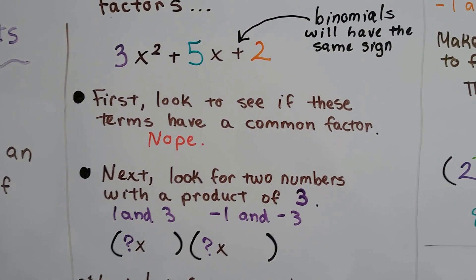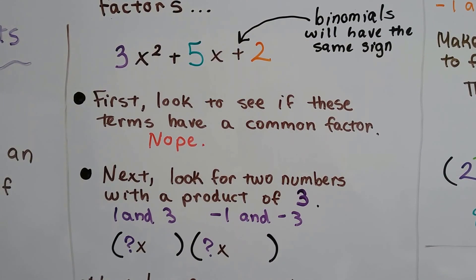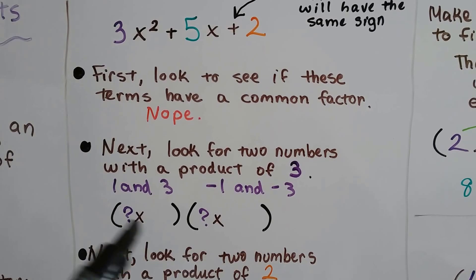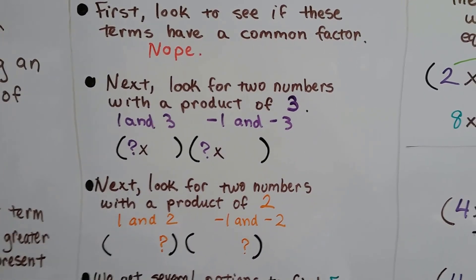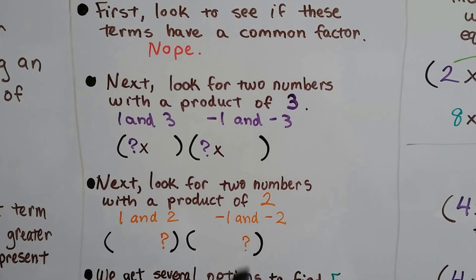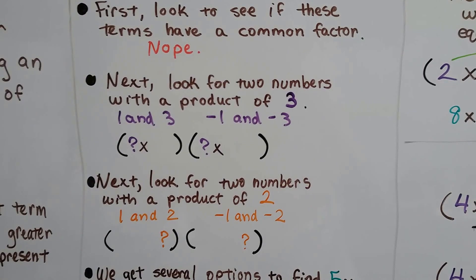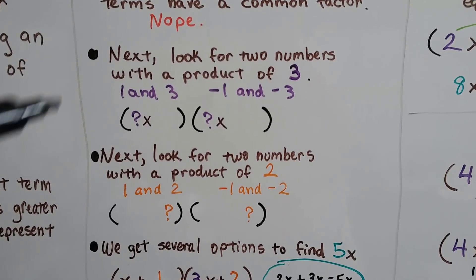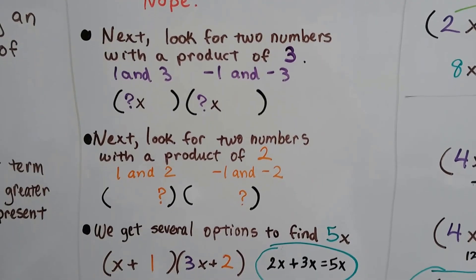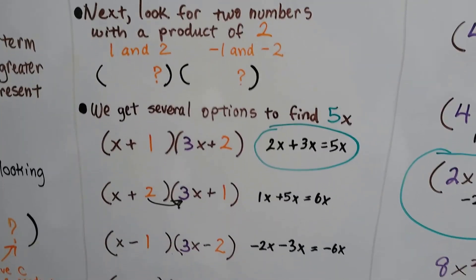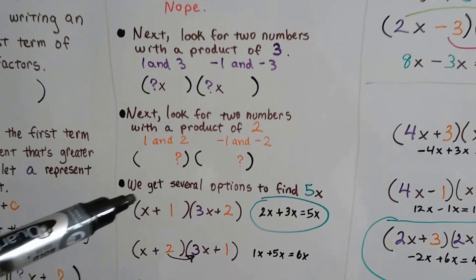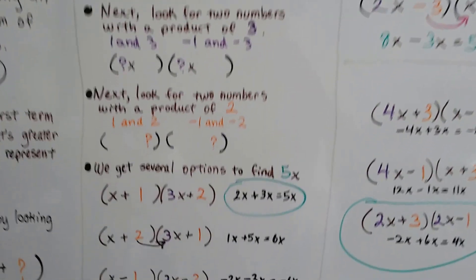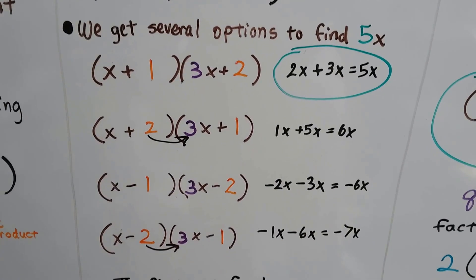Next, we look for two numbers with the product of 3. We can do positive 1 and positive 3, or negative 1 and negative 3 — that gives us positive 3 for the first term. Then we look for two numbers with a product of 2 for the last term. We could do positive 1 and positive 2, or negative 1 and negative 2. Now we have several options to find what gives us 5x when we do the outside-inside part of FOIL, so we start making a list of all our options.